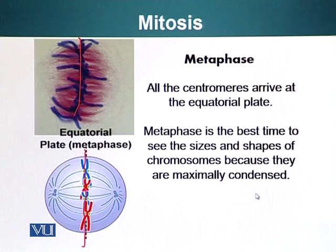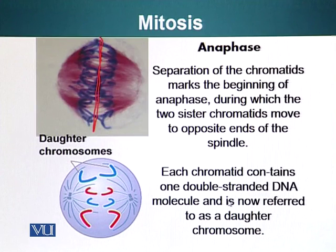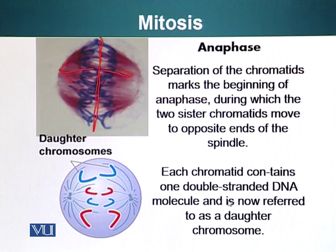Here you can also see in this figure the chromosomes lined up at the equatorial plate. The next stage is anaphase: separation of the chromosomes marks the beginning of anaphase, during which the two sister chromatids move to opposite ends of the spindle. Now the chromosomes have started to move towards the opposite poles — these are the daughter chromosomes. Each chromatid now contains one double-stranded DNA and is referred to as the daughter chromosome.